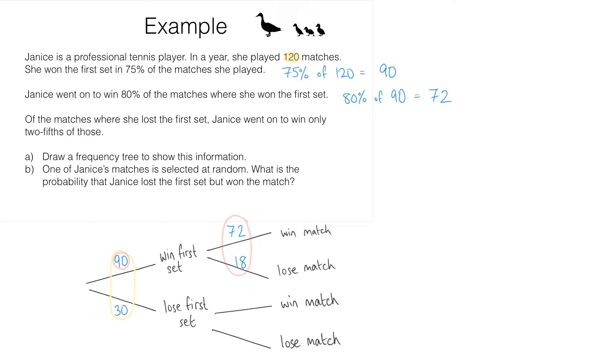Let's carry on to the next bit of information. Of the matches where she lost the first set, Janice went on to win only two-fifths of those. Well, she lost the first set in 30 matches. Out of these 30 matches she's going to win two-fifths of them. So we need to work out two-fifths of 30. Now one-fifth of 30 is 6, so two-fifths of 30 is going to be two lots of 6 or 12.